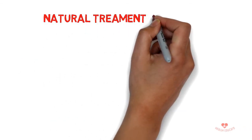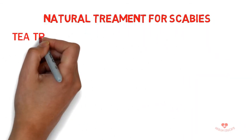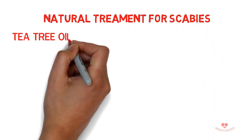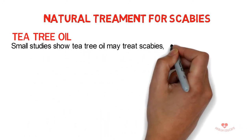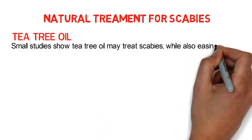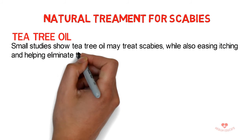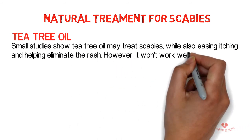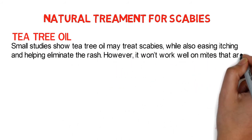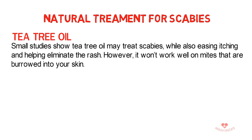Natural treatment for scabies. 1. Tea tree oil — small studies show tea tree oil may treat scabies, while also easing itching and helping eliminate the rash. However, it won't work well on mites that are burrowed into your skin.